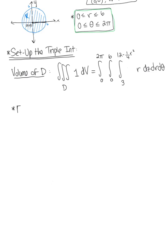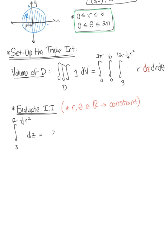Starting from the inside, we evaluate the inner integral with respect to z, treating r and theta as constants. The integral from 3 to 12 minus r squared over 4 of dz integrates to z evaluated from 3 to 12 minus r squared over 4. This gives 12 minus r squared over 4 minus 3, which simplifies to 9 minus r squared over 4.